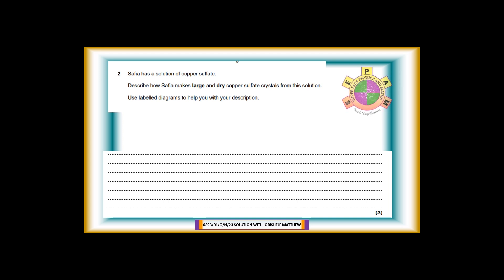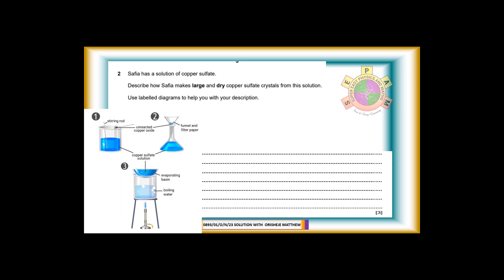Question 2. Safia has a solution of copper sulfate. Describe how Safia makes large and dry copper sulfate crystals from this solution. Use label diagrams to help you with your description. For 3 marks. Answer: There are six steps to follow. Step 1: Heat dilute solution of copper sulfate to make a concentrated solution. Step 2: Make a saturated solution of copper sulfate until first appearance of crystals. Step 3: Leave hot solution to evaporate for a few days. Step 4: Filter off the blue crystal. Step 5: Wash crystals with a small amount of cold water. Step 6: Dry crystals between filter paper.